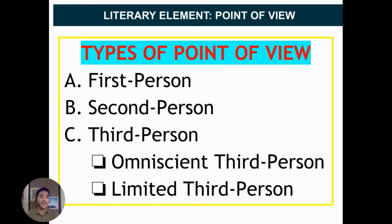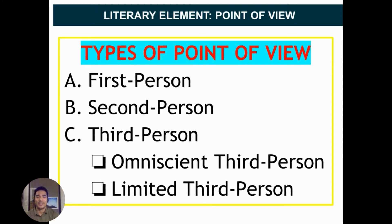We have three types of point of view: first person, second person, and third person point of view. Under third person, we have omniscient third person and limited third person. Let's discuss each type.